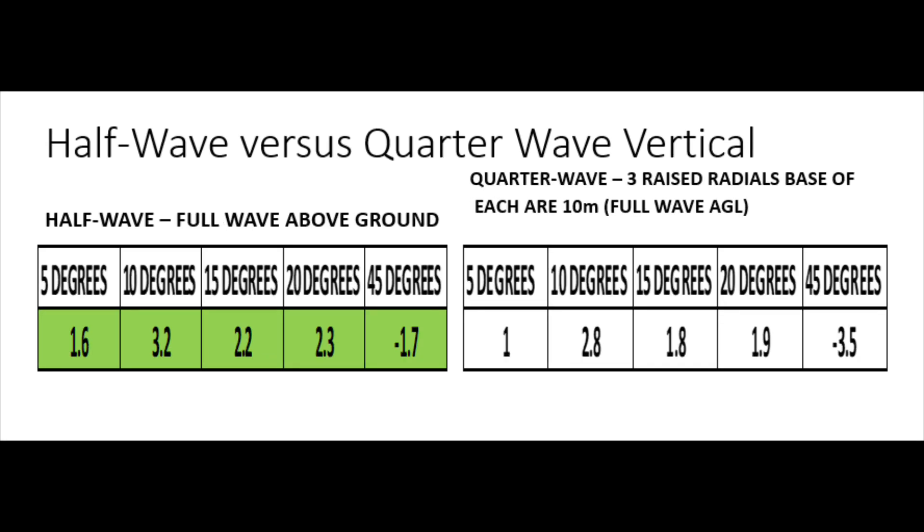Again, if we go back here, we can see, again, the half wave has a noticeable advantage at 5 and 10 degrees, about half a dB, and at 20 degrees also. And again, we have a very similar advantage for the quarter wave at 45 degrees. So overall then, we've got a situation here where the half wave for the lower angles, for our DX, 5, 10 degrees off the horizon, the half wave has a slight advantage.